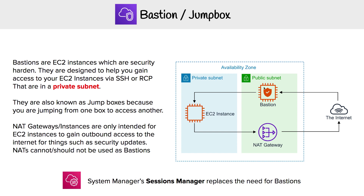This EC2 instance for the bastion is hardened, so it should be very, very secure, because this is going to be your point of entry into your private EC2 instances. Some people might ask: if a NAT instance — like NAT gateways, we can't obviously turn into bastions — but a NAT instance is just an EC2 instance, couldn't you have it double as a bastion? The possibility exists, but generally with the way you configure NATs, and also from a security perspective, you'd never ever want to do that. You'd always want to have a different EC2 instance as your bastion.